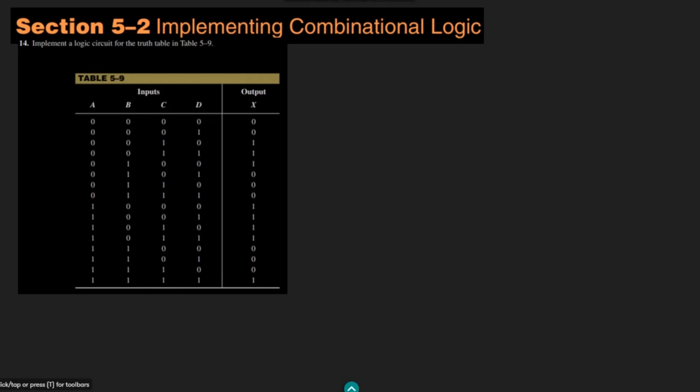Welcome back guys, this is section 5.2 again and here we are implementing the combinational logic circuits. Question number 4: implement a logic circuit for the truth table in figure 5.9. The logic circuit is comprised of all the inputs and will give us the output in accordance with the inputs given to it.